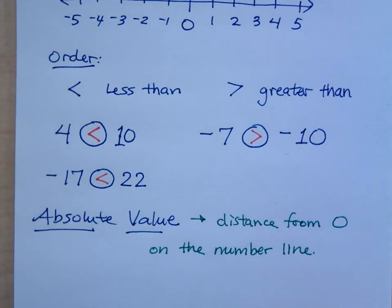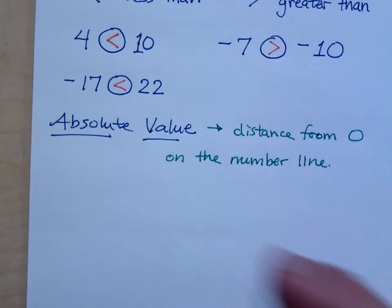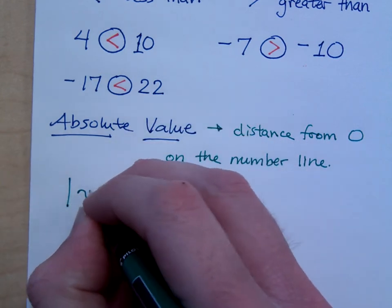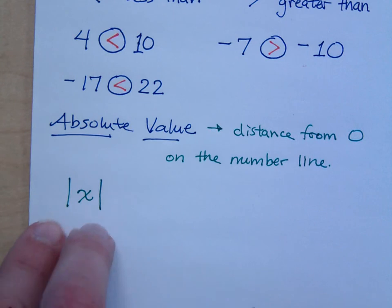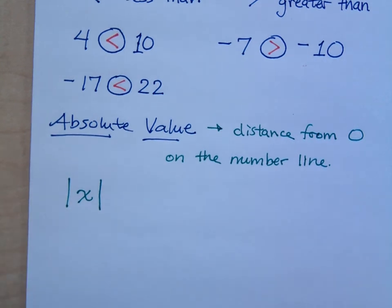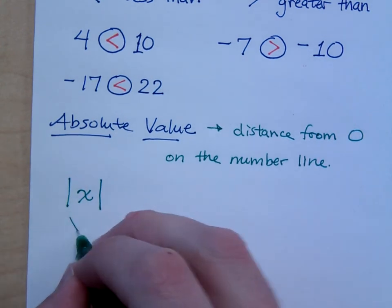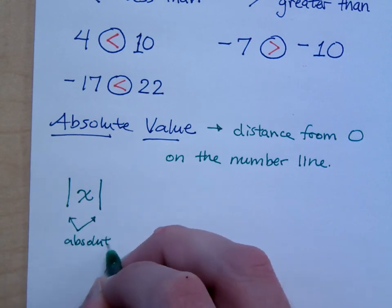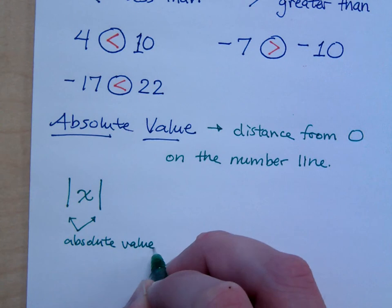When I talk about the absolute value, I want to find out how far from zero is a particular number on the number line. And the symbols that we use, we'll do something like this. I use these two vertical bars to mean the absolute value. Now I'm just using x as a variable, as a placeholder for any number that you come across. These are the symbols for absolute value.